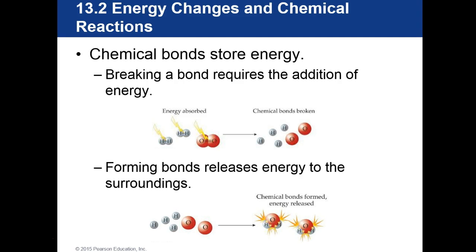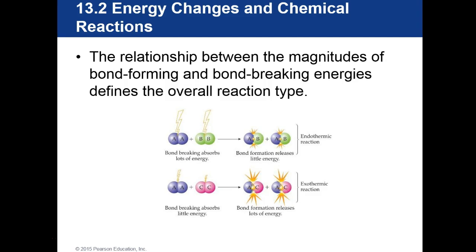Chemical bonds actually store energy. Breaking a bond requires the addition of energy — we covered that in earlier chapters. The relationship between the magnitudes of bond-forming and bond-breaking energies defines the overall reaction type. In an endothermic reaction, bond breaking absorbs a lot of energy while bond formation releases very little. In an exothermic reaction, bond breaking absorbs very little energy but formation releases a lot.